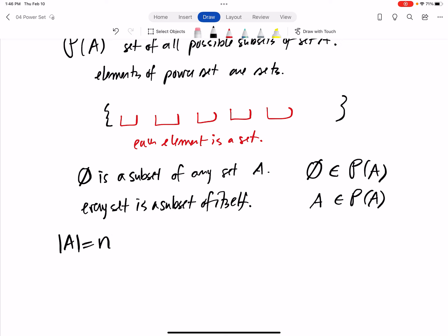When you think about the cardinality of A, let the cardinality of A be n. Suppose it has n elements. Let's say it had three elements in it. Then the cardinality of the power set is going to be 2 to the n.